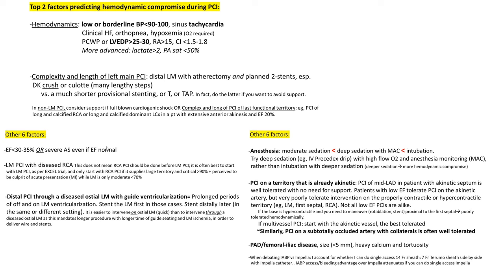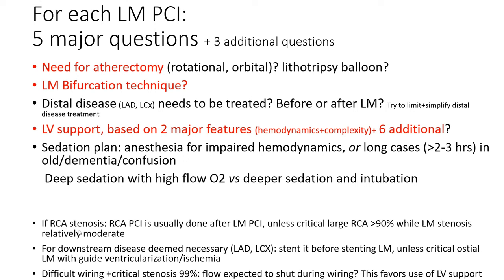The three additional questions are: if you have RCA stenosis, should you stent it first or after? Usually RCA stenting is done after left main PCI as per the EXCEL trial, unless you have a critical, large, super-dominant RCA with stenosis over 90% while the left main stenosis is relatively moderate. For downstream disease deemed necessary to treat, you may stent it before left main, unless you have a critical osteo-left main with guide ventricularization and ischemia, or ongoing left main ischemia. The third additional question is whether it is difficult to wire the left main or proximal LAD with a critical 99% stenosis, so much so that flow is expected to shut down during wiring — this may further favor LV support.